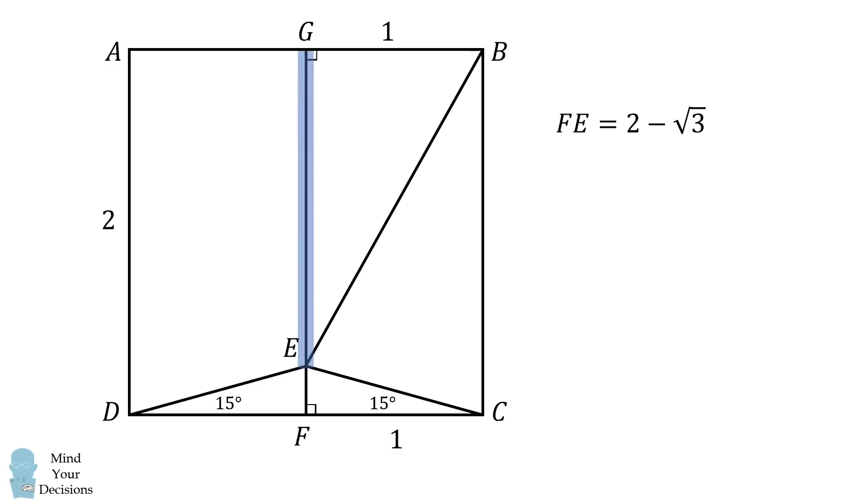Then, we can calculate the length of EG. It will be equal to DA minus FE. DA is equal to 2. We've calculated FE. Therefore, EG will be equal to the square root of 3.